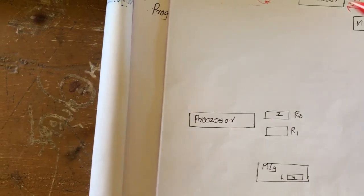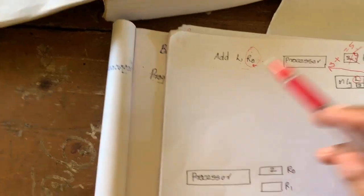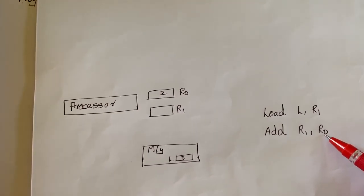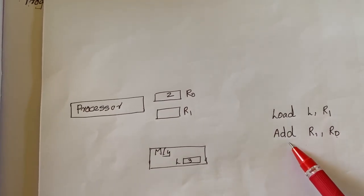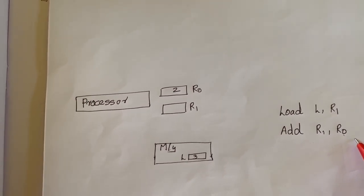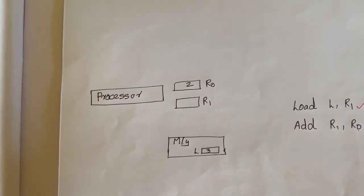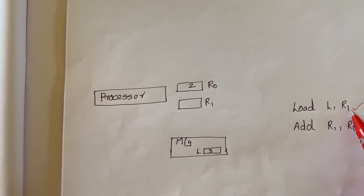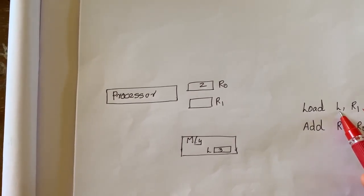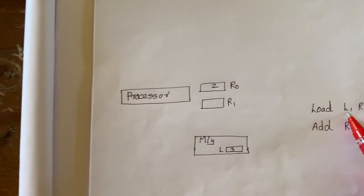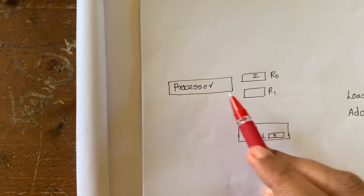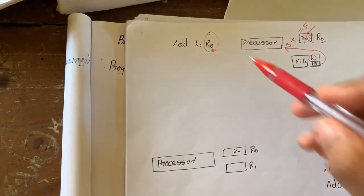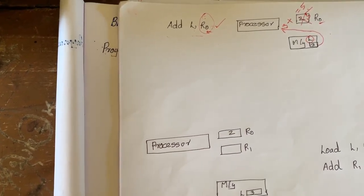In many modern computers, these two types of operation represented by the single instruction are instead represented as a sequence of two instructions for performance reasons — we will study that reason in later classes. So consider that situation as well: the single instruction is represented as a sequence of two instructions: Load L, R1 and Add R1, R0.